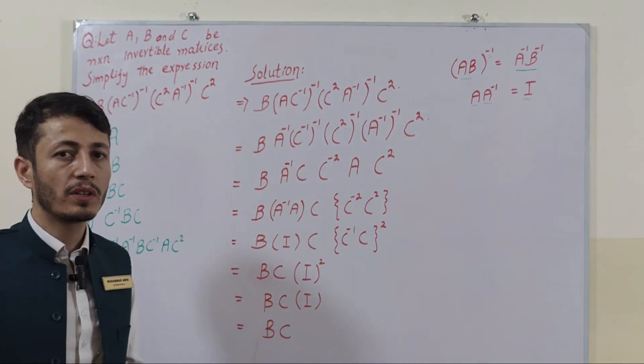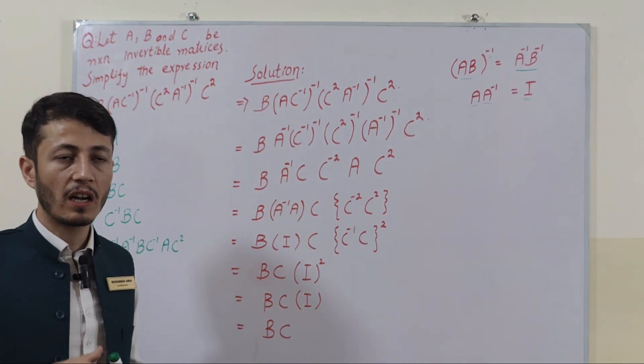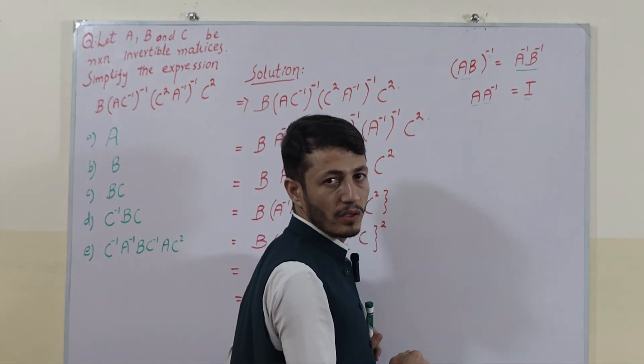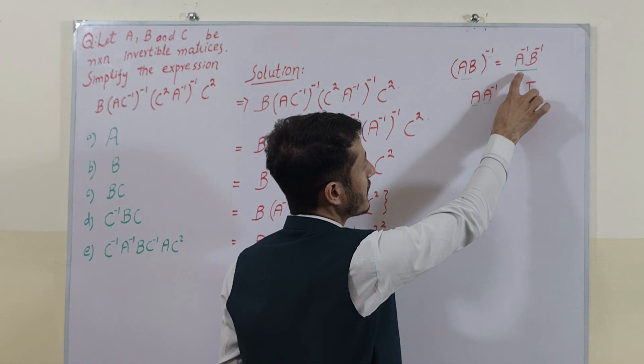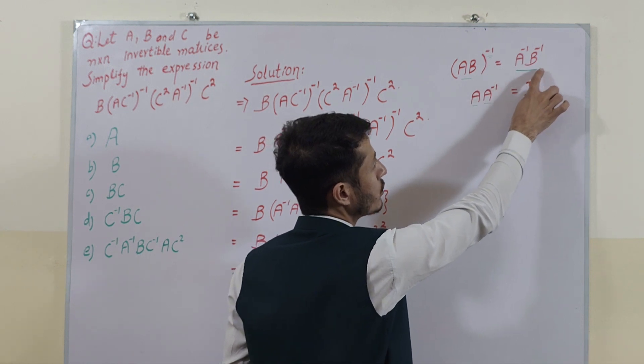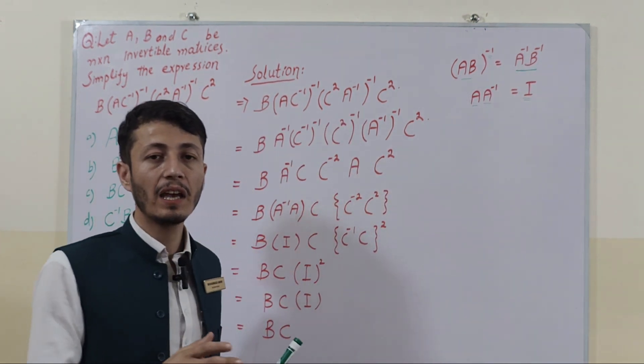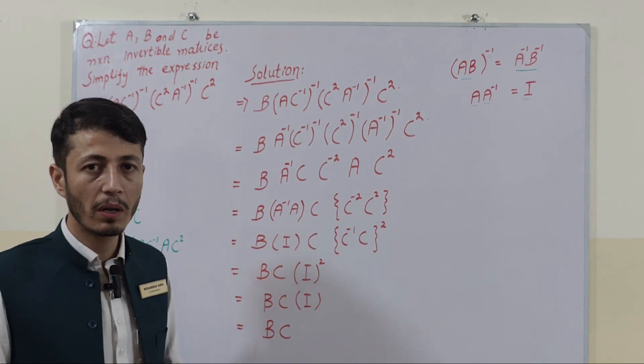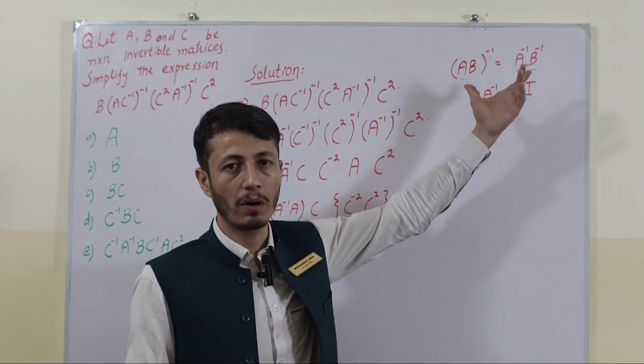Here two properties of mathematics from linear algebra are used. If A and B are multiplied and the whole inverse of them, it can be written as A inverse into B inverse, because A, B and C are invertible matrices. So for invertible matrices we can write it in the form of this one.